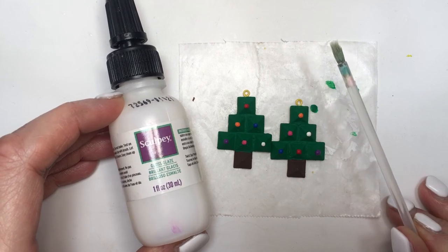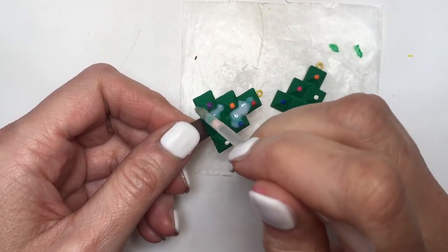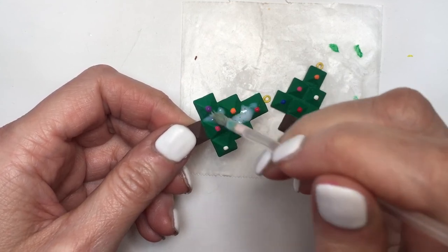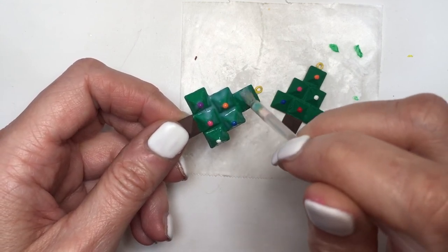Then as a final step, I'm going to be adding some gloss. This is going to protect the design, it's going to make all the colors pop a lot more, and it's going to be nice and shiny. I think it looks better with this. Feel free to use a clear nail polish. I added two coats of this one, letting it dry in between.